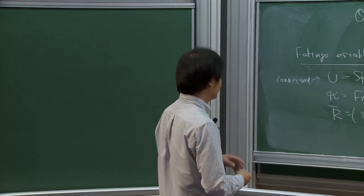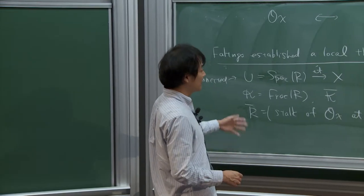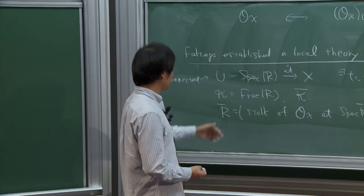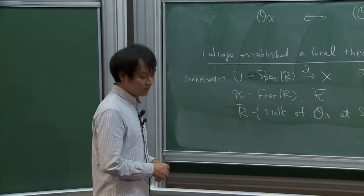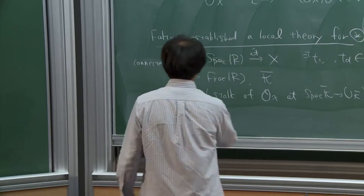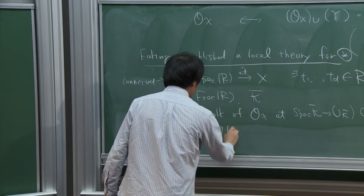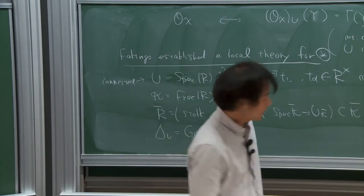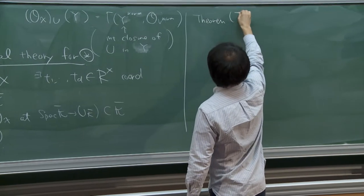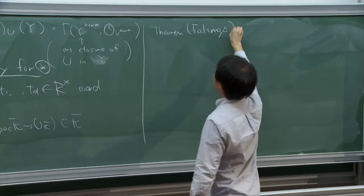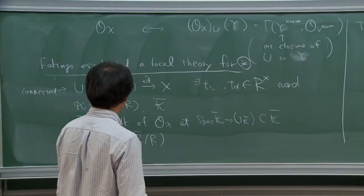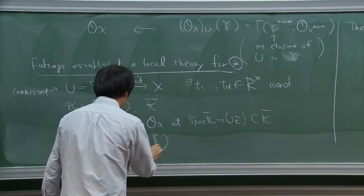This is not finite étale, but a union of finite étale schemes on the generic fiber. If you invert P, then this is a union of finite étale schemes over the generic fiber, and then we take the integral closure of R. This is the usual ring used in the p-adic Hodge theory. And Δ_U is the Galois group of R-bar over R.